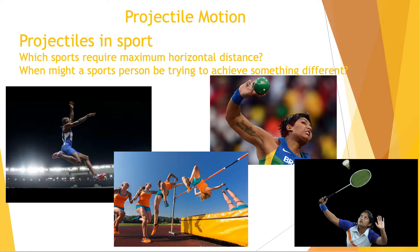Similarly with the shot putter - once the shot put is released it becomes a projectile with weight and air resistance acting on it, and the shot putter is trying to get it to travel as far horizontally as possible. By contrast, the high jumper is also a projectile but is not looking to travel as far horizontally - they want maximum vertical distance against a small horizontal distance. In racket sports or football, we might want an implement to turn in the air or drop suddenly, not necessarily travel as far as possible.